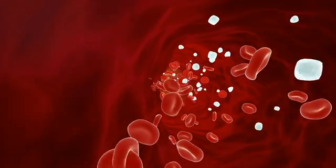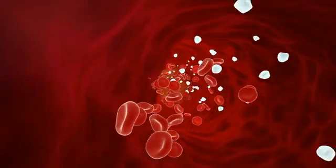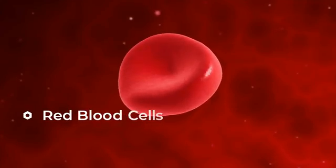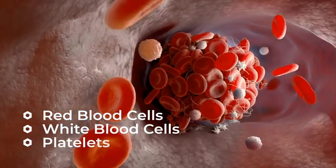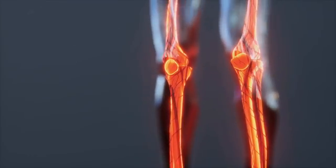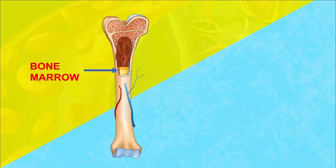To understand iron deficiency anemia, we first have to look at a process called hematopoiesis. Hematopoiesis is the process the body uses to make blood cells, and that includes red blood cells, white blood cells, and even the platelets that are involved in blood clotting. This process happens inside the bones, but more specifically in the bone marrow — that's the spongy tissue found inside the bones.